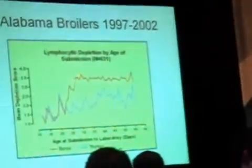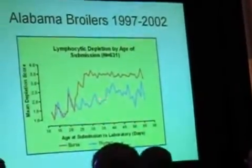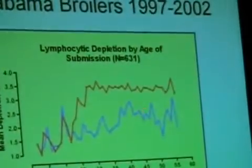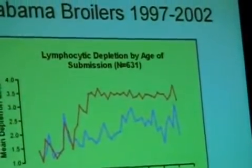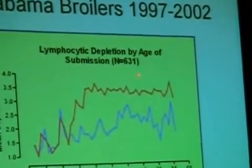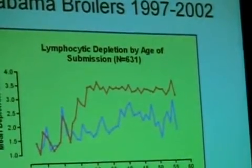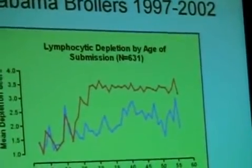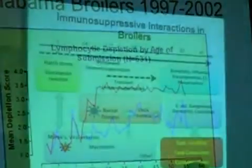We've studied this over many years. We learned that in Alabama, the bursal disease challenge typically occurs between days 20 and 30. This shows the increase in bursal scores from diagnostic cases, and this blue line represents the thymus atrophy that occurs in birds in the field. This is based on hundreds of cases — more than 600 cases — so this is a trend we see repeated even today.